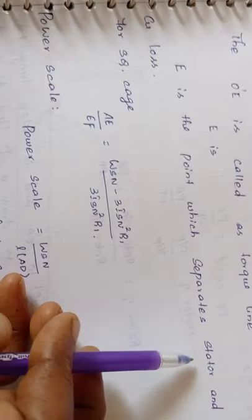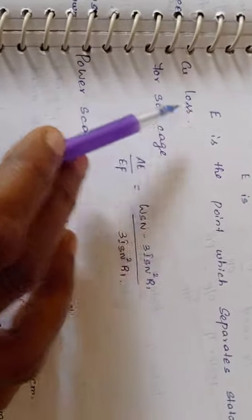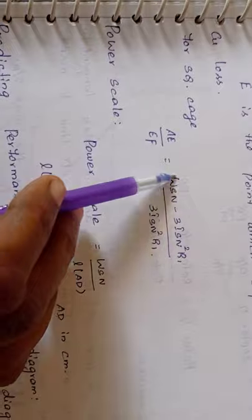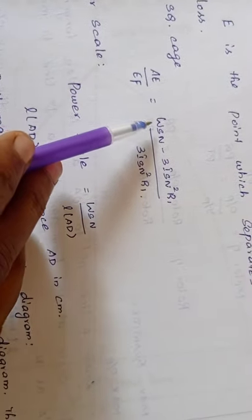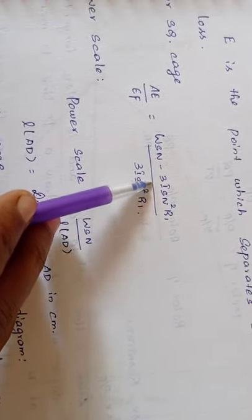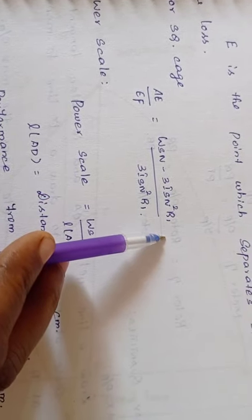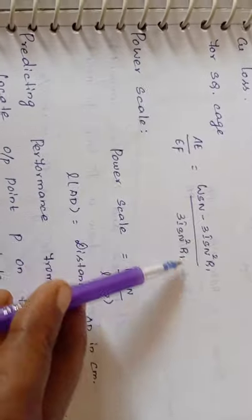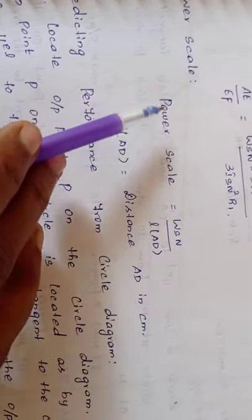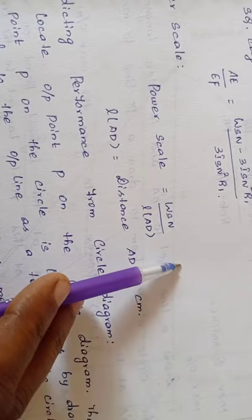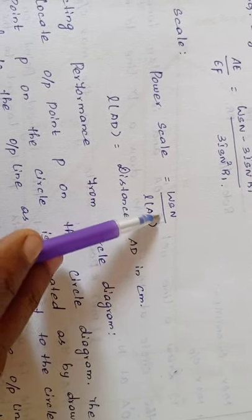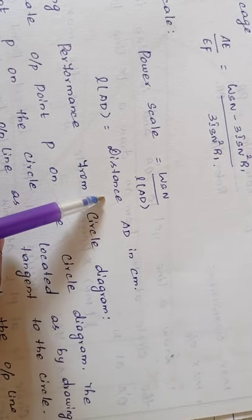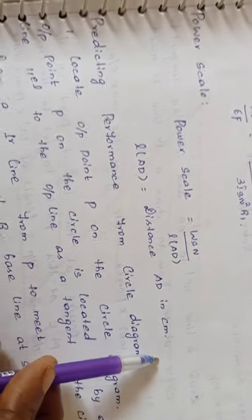For the squirrel cage induction motor: A-e / E-f = (W-SN − 3 × I-SN² × R-1) / (3 × I-SN² × R-1). The power scale is given by: power scale = W-SN / (L × A-d), where A-d is the distance in centimeters.